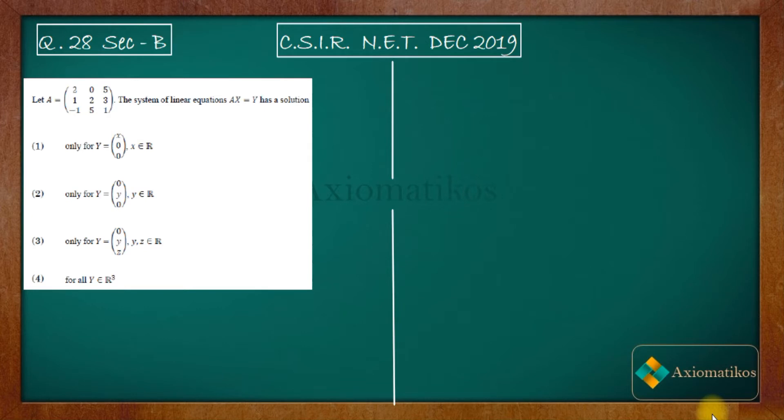The system of linear equations A*x = y has a solution, and we are given four options, only one of which is correct. We know that if A*x = y has a unique solution,